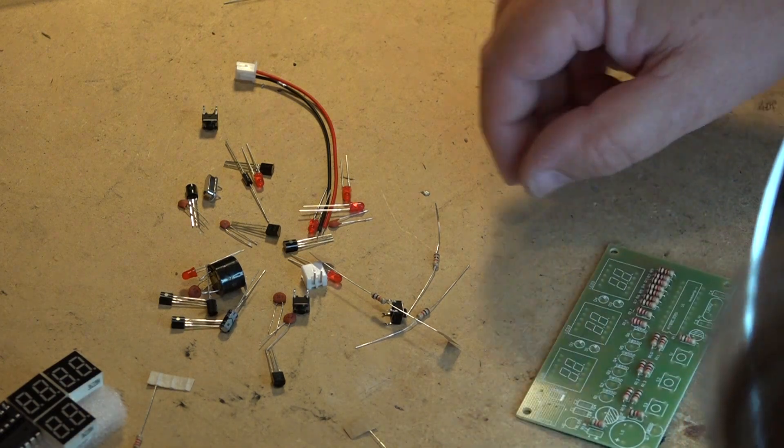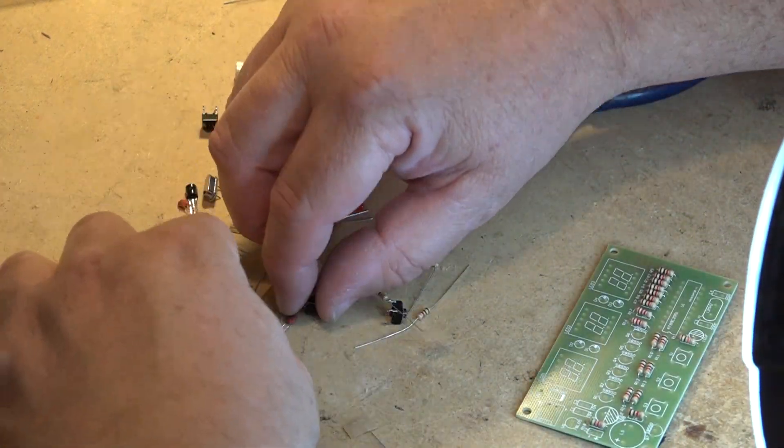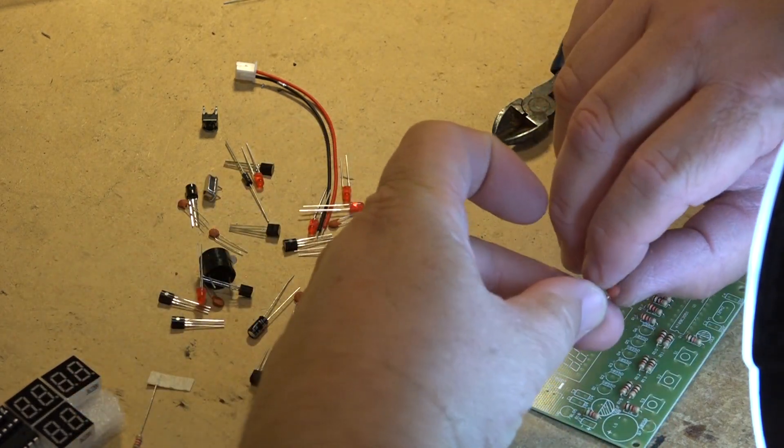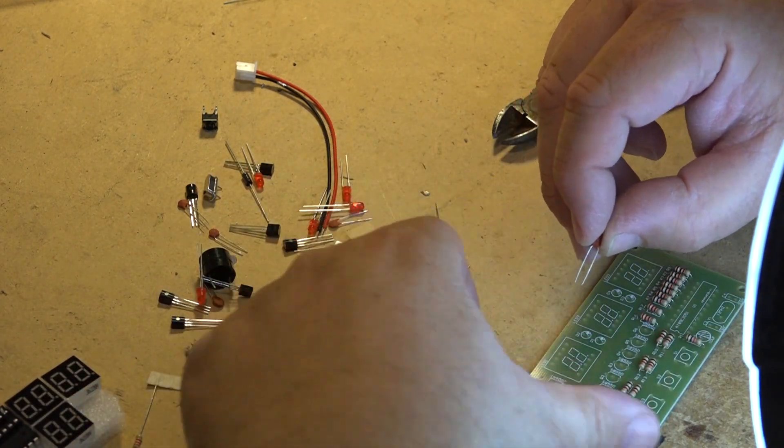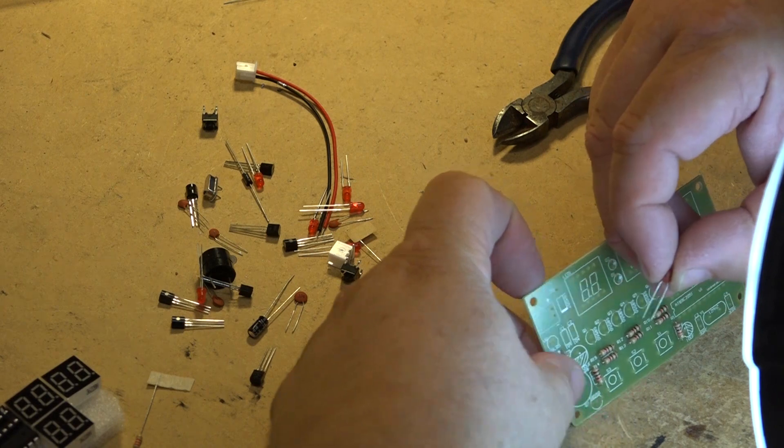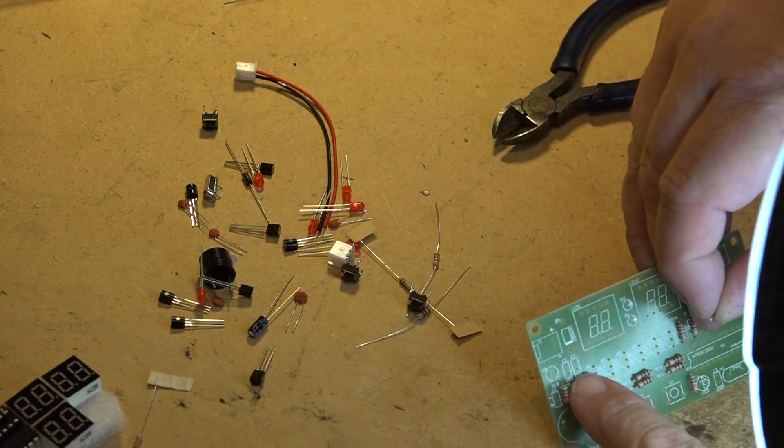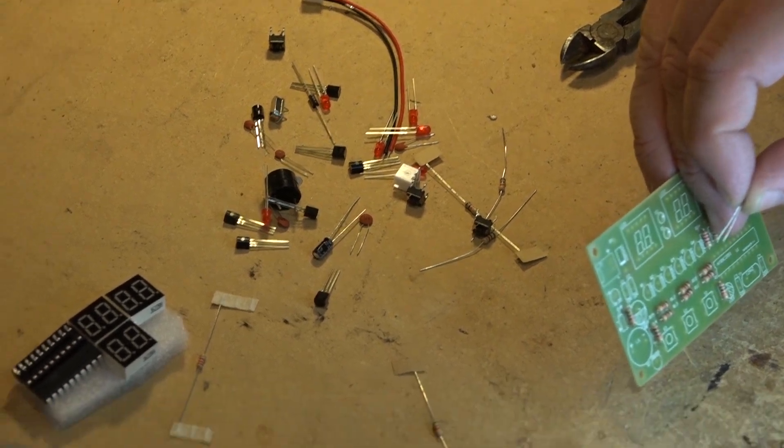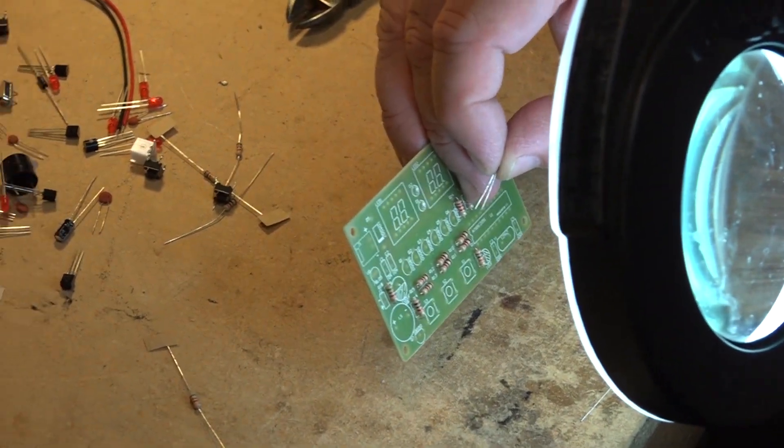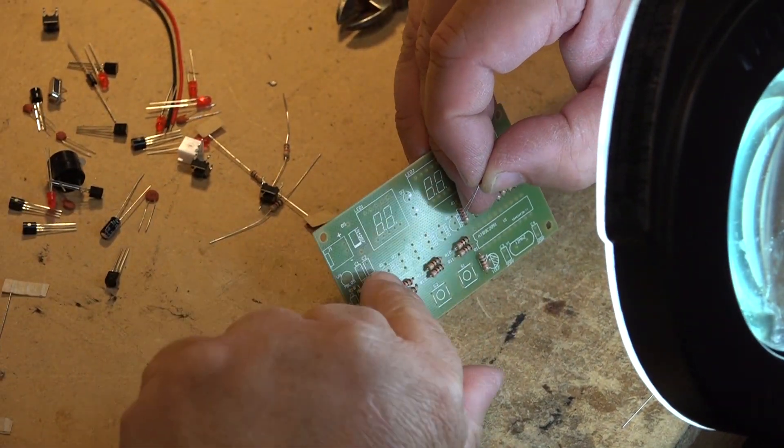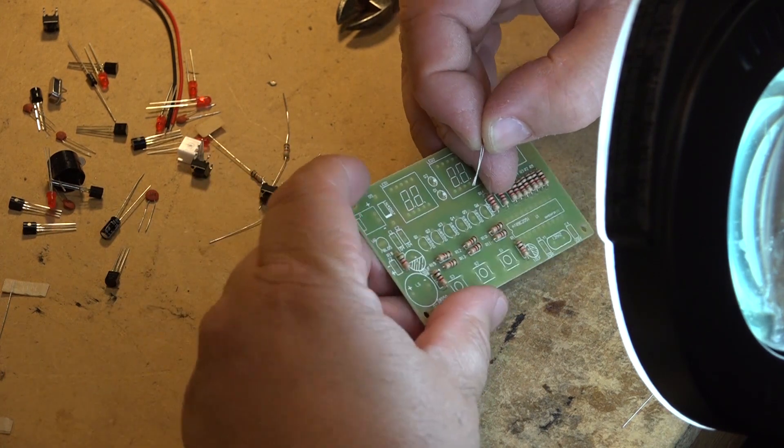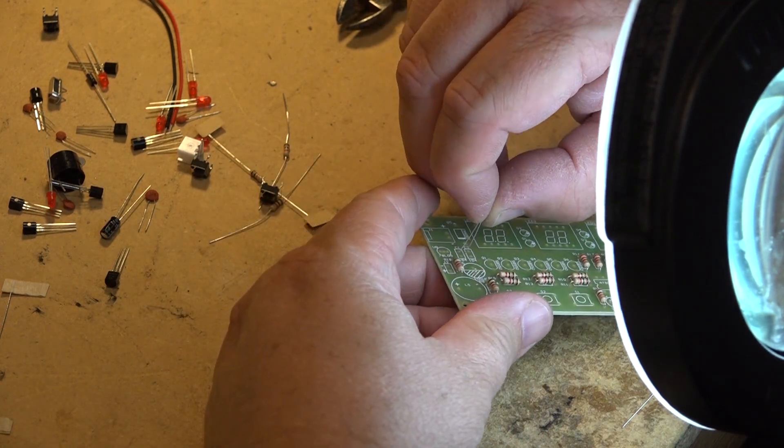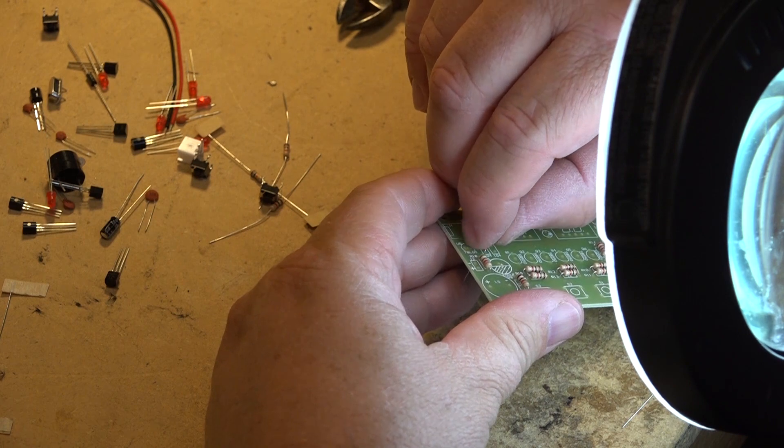Next, I'll mount capacitors. There are little ceramic capacitors labeled 104. They go down here. Polarity is not important on ceramic capacitors, so you can mount them any which way.